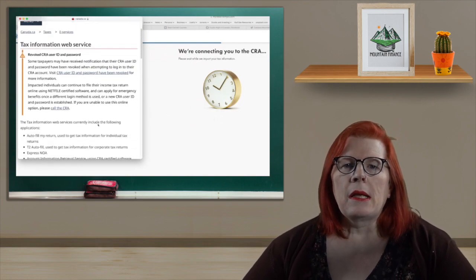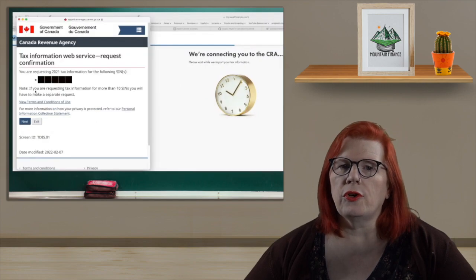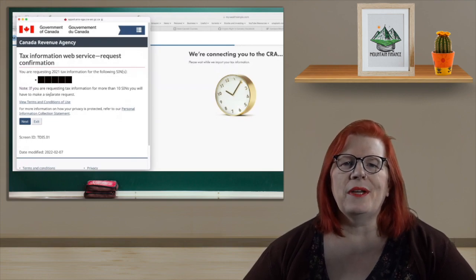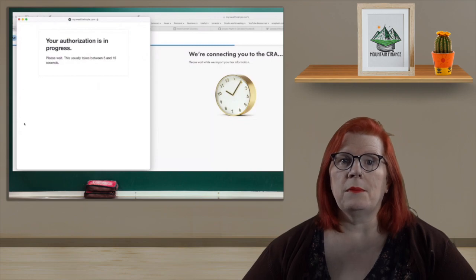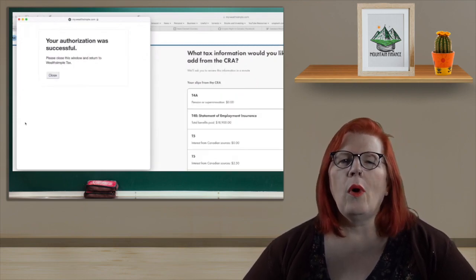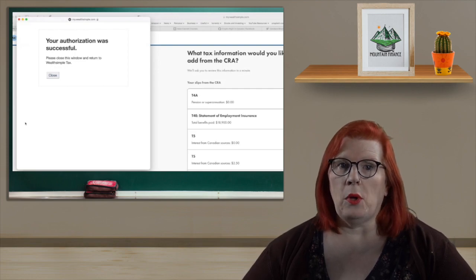Once you are in, it will let you know that you are requesting tax information for your SIN number, which is blacked out on my video. It will then tell you again and all you need to do is hit Next and your authorization should be in progress. Once you get the successful message, you can close the pop-up and return to Wealthsimple.